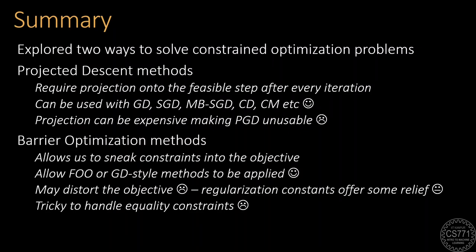The second way involve the use of barrier functions that hide the constraints inside the objective itself, yielding an unconstrained problem to which first-order optimality or gradient descent methods can be applied. However, barrier methods cannot handle equality constraints very easily and may also distort the objective, although careful use of regularization constants may address this to some extent.